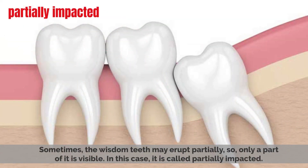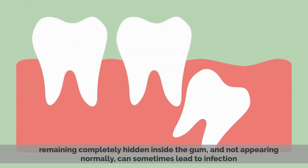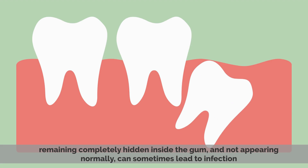Sometimes the wisdom teeth may erupt partially, so only a part of it is visible. In this case, it is called partially impacted. A wisdom tooth remaining completely hidden inside the gum and not appearing normally can sometimes lead to an infection.